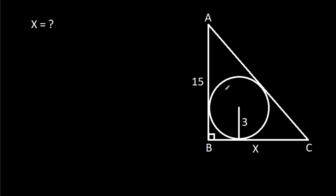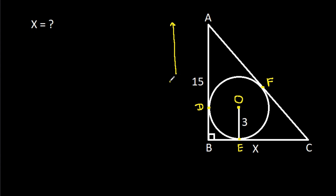In this video, we have been given a circle of radius 3 inside a right angle triangle. AB is 15, BC is x, and we have to find x.